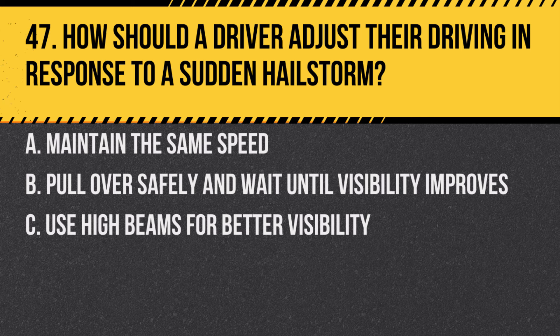Question 47. How should a driver adjust their driving in response to a sudden hailstorm? A. Maintain the same speed. B. Pull over safely and wait until visibility improves. C. Use high beams for better visibility. Answer: B. Pull over safely and wait until visibility improves. Hail can reduce visibility and create hazardous driving conditions.